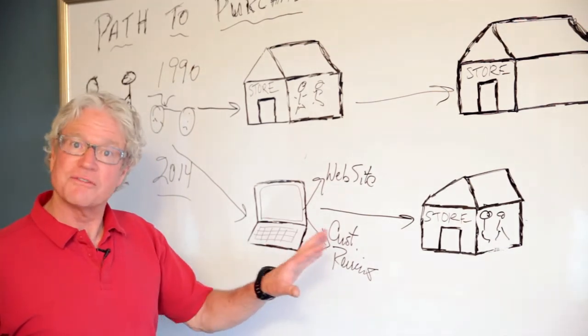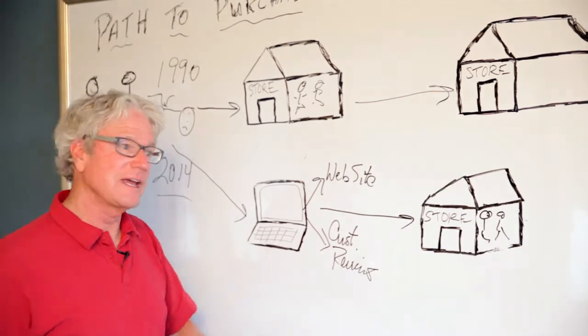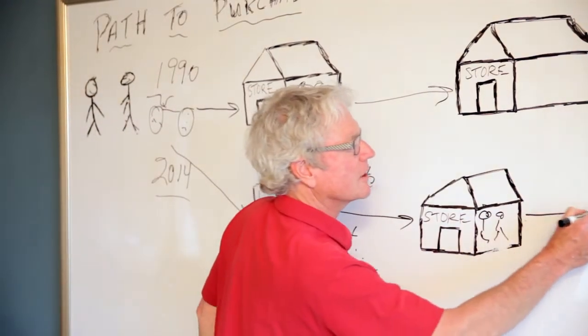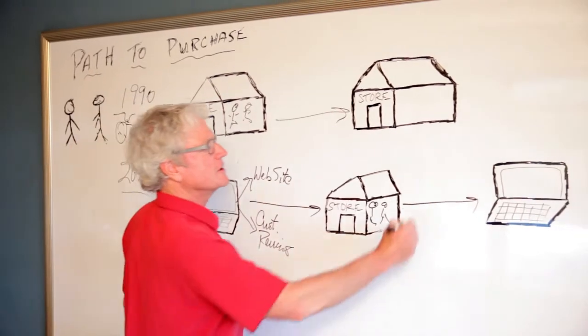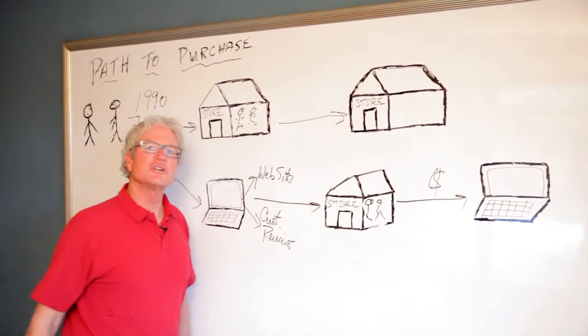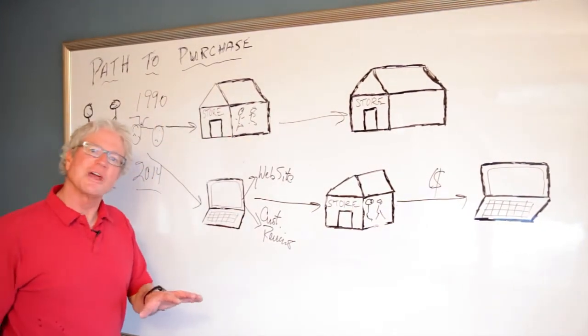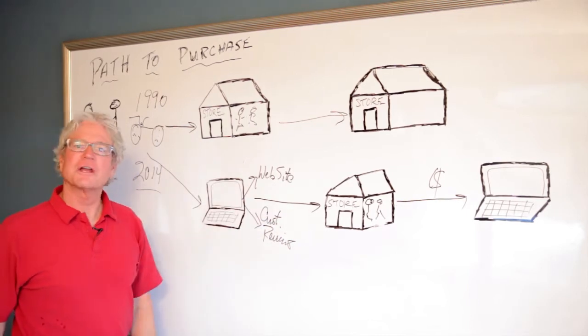And because if that's not the case, then that consumer is going to go back online and that consumer is going to purchase online because he or she knows exactly the road bike that they want and they're going to get it online.